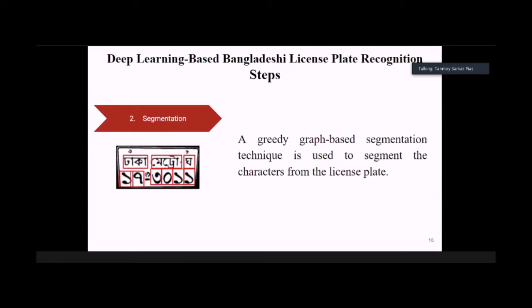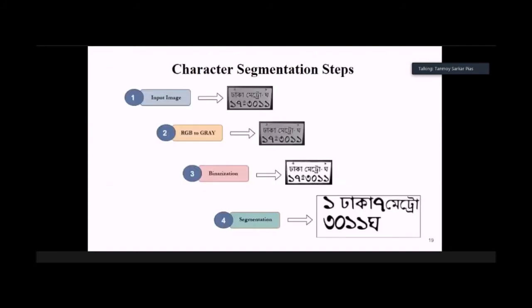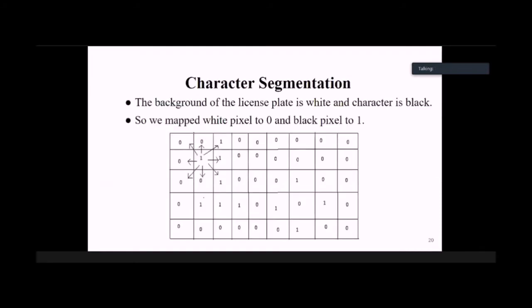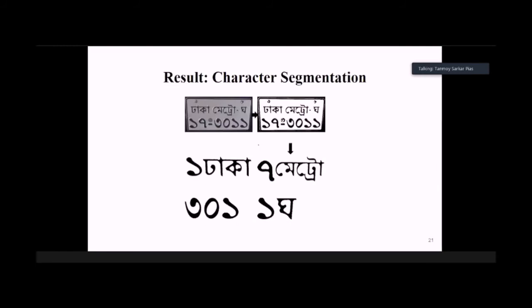Then we go to the segmentation process. My colleague already discussed this story, so I'm going to just brief. In the segmentation process, we use a greedy graph-based segmentation technique to segment the characters from the license plate. There are four stages, and in the fourth stage we get the segmented characters. This mapping actually works on BFS. This is a modified version of BFS and connected components. Other implementations are possible, but their complexity is higher. This is very simple and lightweight segmentation process.